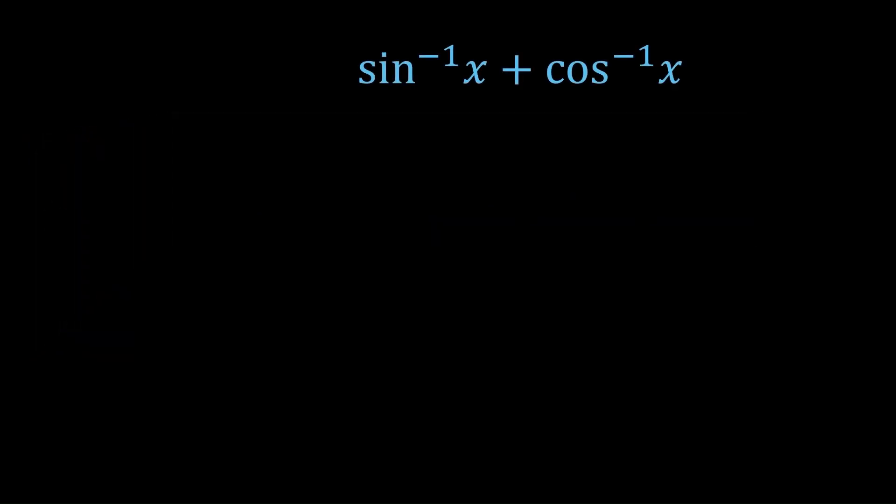Next one is sin inverse x plus cos inverse x. The reason I made it off-centered is because I want to call it f of x. Why? Well, the derivative of sin inverse x is 1 on square root 1 minus x squared, and the derivative of cos inverse x is the negative of that.